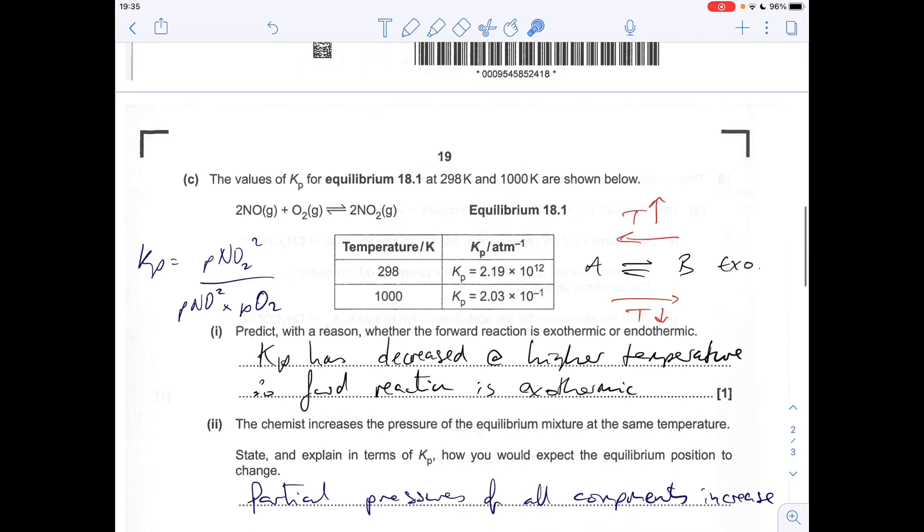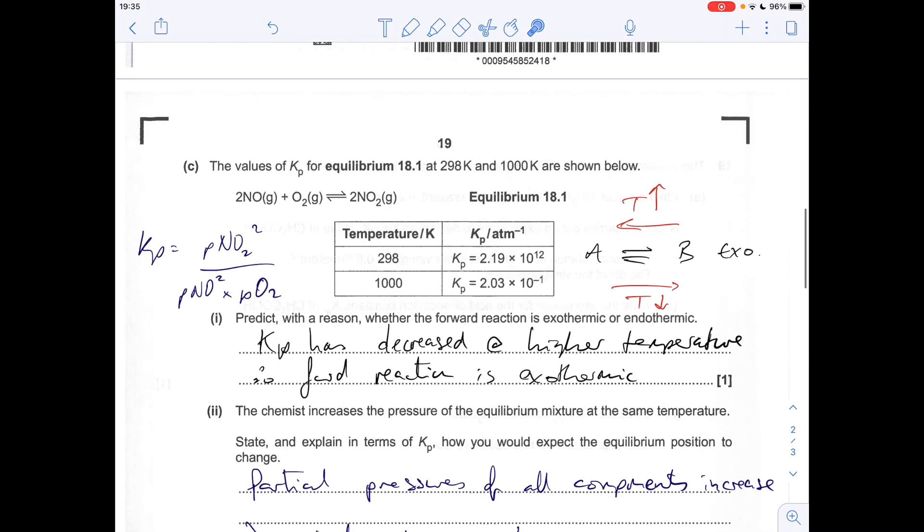The first part of C: Predict with a reason whether the forward reaction is exothermic or endothermic. If we look at the Kp values, going up in temperature from 298 to 1000, Kp has actually dropped. So what that means is the equilibrium's gone backwards, gone to the reactant side.